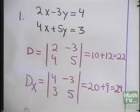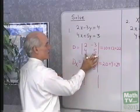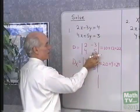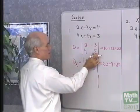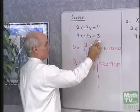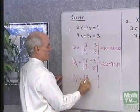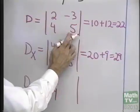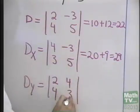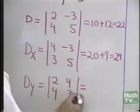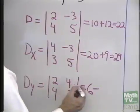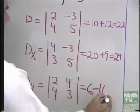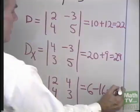The determinant D sub y is the same as my original coefficient determinant, except that in place of the coefficients of y, I use the constant terms. So it's 2, 4 — those numbers stay. Then in place of the y coefficients, I use the constant terms. I evaluate this: 2 times 3 is 6, subtract 4 times 4 is 16, and I end up with negative 10.